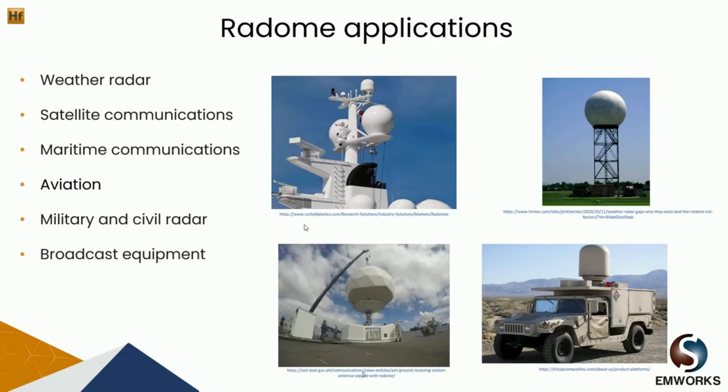Now that we've talked about different types of antenna radomes, let's look at areas where radomes are being used. The use of radomes applies to a range of industries that require the protection of sensitive equipment, electronic components, and personnel. This includes weather radar, satellite communication, and maritime communications. Radomes are also being used in aviation, military and sea radar, as well as for broadcast equipment. On the right we have different images showing the use of radomes in various applications.